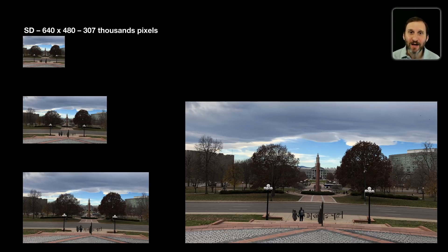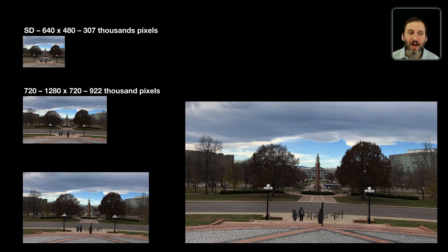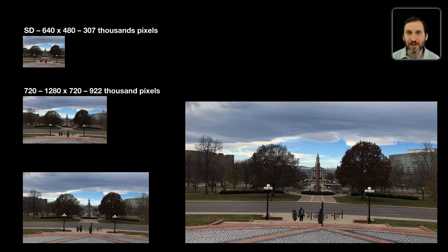Then we moved on to high definition, but there were several versions of that. The first was called 720. 720 improved everything considerably — it standardized everything at 1280x720 pixels, which is three times as many pixels in the image as standard definition video. A lot of phones, a lot of cameras, and everything used 720, and then it became standard on TVs that you bought at the store.